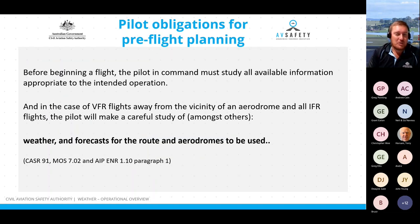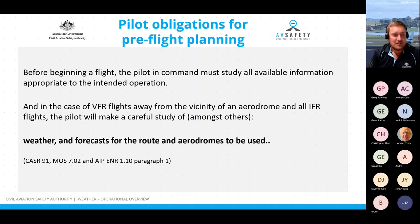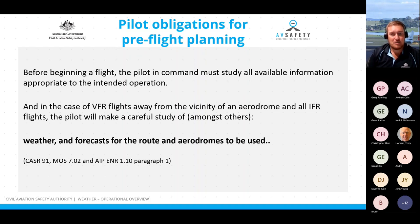Our responsibility as pilot in command starts long before we turn the key. Prior to any flight, a pilot must study all available information as well as any reasonably available relevant weather information for the intended flight, appropriate to the intended operation, including current weather forecasts. That requirement is contained in the Civil Aviation Safety Regulations Part 91, the associated Manual of Standards, and also in our AIP. The pilot must plan the flight in relation to the information obtained, which may include planning for an alternate aerodrome.